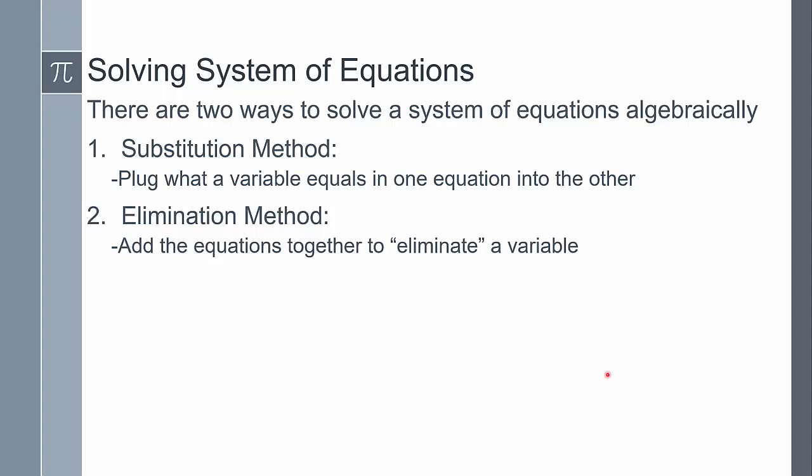The second method, probably not covered as much, is the elimination method, which derives from linear algebra. The idea is that you can add one equation to another to create a new equation. Because of that, we can use it to eliminate a variable. When there are two variables, we can't solve for one — but if we manipulate the equations so that adding them together leaves only one variable, then we can solve for it.